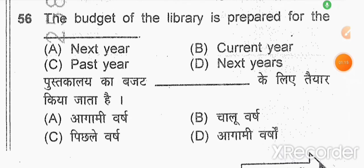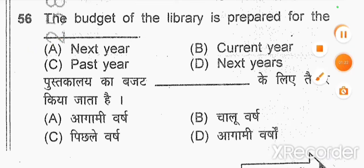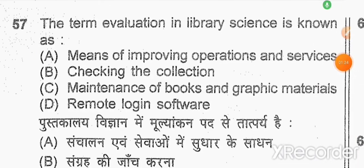The budget of the library is prepared for — option is here. Question number 57: the term 'evaluation' in library science is known as — option A — means of improving operations and services.